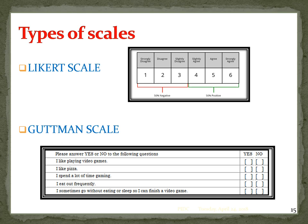In the Likert scale, we find the median. For example, 4.5% of people were agreeing. For now, just remember there are two scales: Likert scale and Guttman scale.